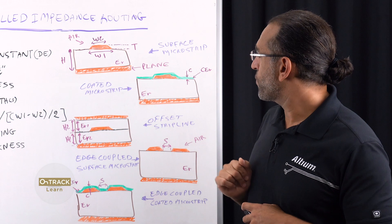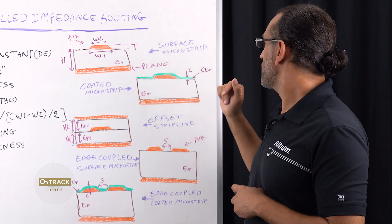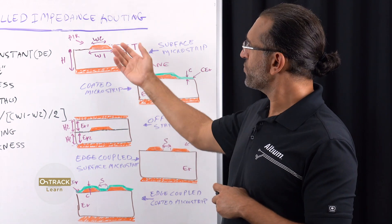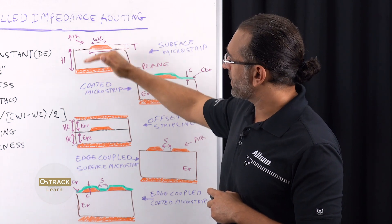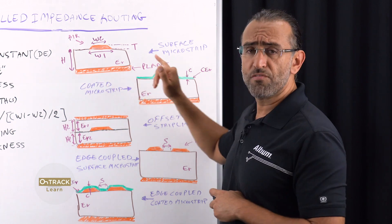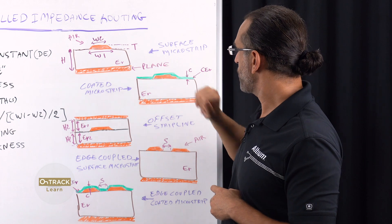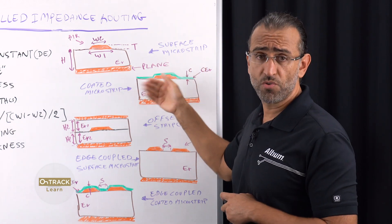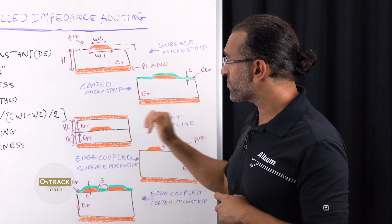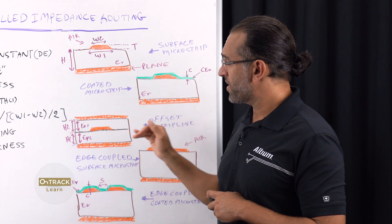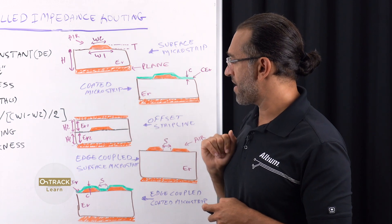Here are some typical configurations you'll find on most designs. The first is a surface microstrip, which is a track on top or exposed to air with no coating, one dielectric constant material, and a single plane from one side. The coated microstrip is similar to the surface microstrip, except that you have a solder mask that you need to account for in your calculations. The third is the offset stripline, which is a single track sandwiched inside the PCB between two planes and two material constants you'd have to account for.